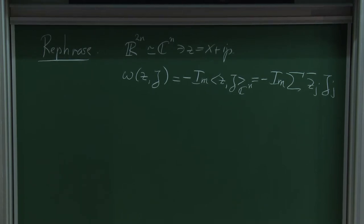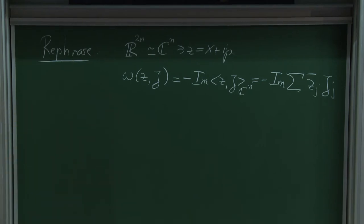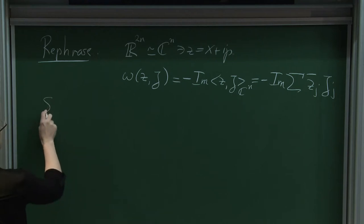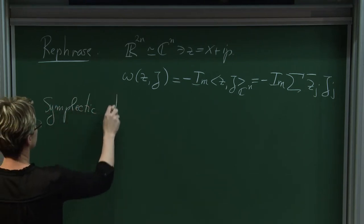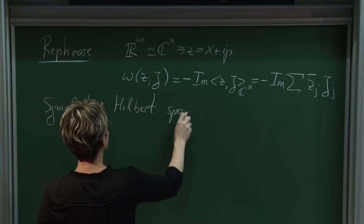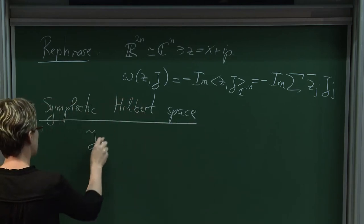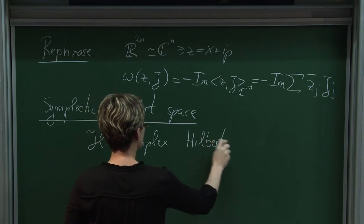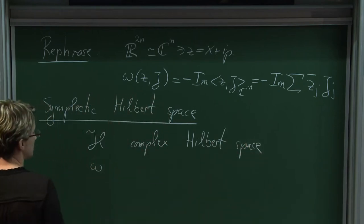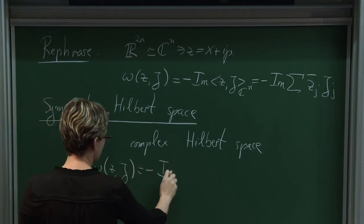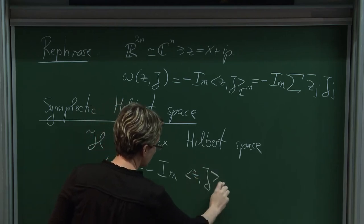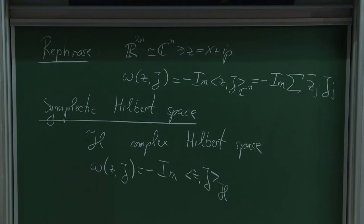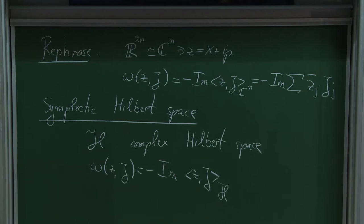The advantage of rephrasing the canonical example this way is that it easily generalizes to a symplectic Hilbert space. A symplectic Hilbert space is a complex Hilbert space H endowed with a symplectic form defined by ω(z, ζ) = -Im⟨z, ζ⟩_H. This is the setting in which the nonlinear Schrödinger equation can be seen to be Hamiltonian, with the underlying symplectic Hilbert space being L^2.